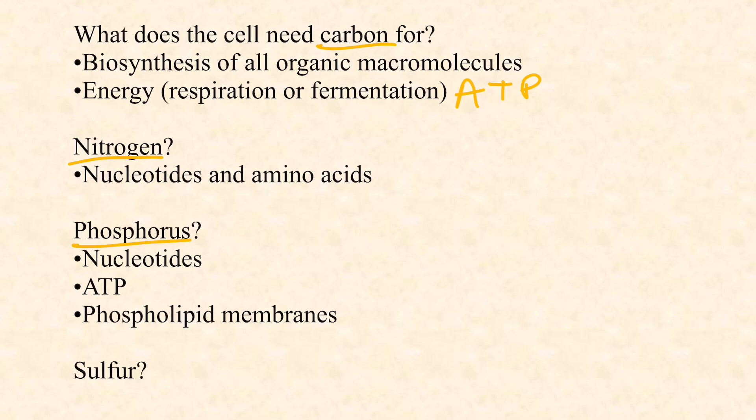With five million base pairs, that's ten million phosphates for a single chromosome. To duplicate it you need another ten million phosphate groups just for DNA replication. Add to that all the RNA produced, plus phospholipid bilayers — every phospholipid has a phosphate group, and there are billions of them in a single membrane. The quantity of phosphate required for nucleic acids and phospholipid membranes is staggering. Every cell also needs a pool of ATP and ADP to cycle.